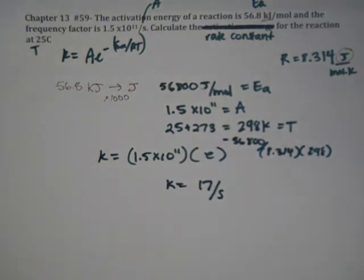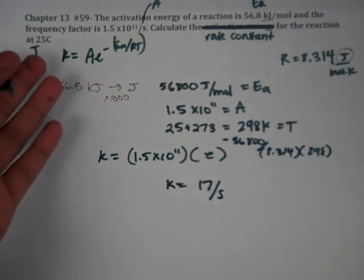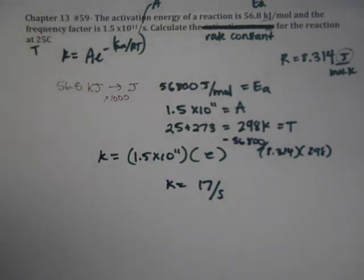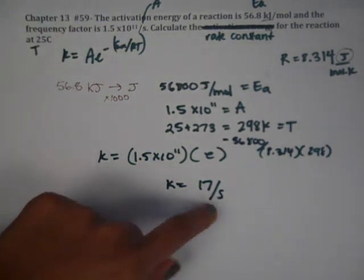Now, you don't need natural logs or anything like that because the formula is all set up in terms of K. If we're solving for A or something like that, we would need natural log. But this one, we're just solving for K, and it's just 17 per second.